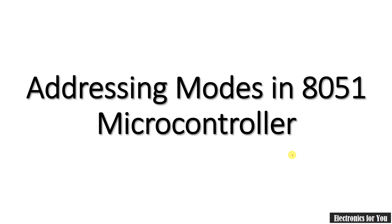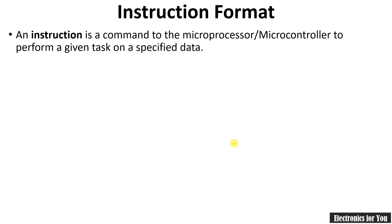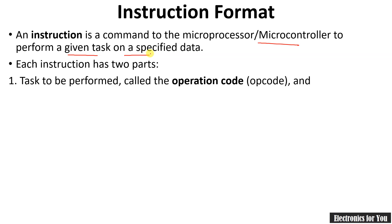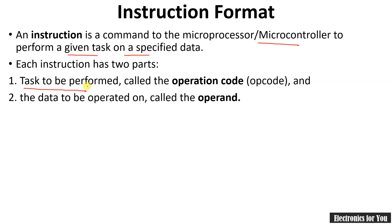Welcome to Electronics For You. In this video I will explain addressing modes in 8051 microcontroller. Let us see the instruction format first. An instruction is a command to the microprocessor or microcontroller to perform the given task on a specified data. This instruction has two different parts: one is opcode and another one is operand. The opcode is the task to be performed, whereas the data to be operated is known as operand.